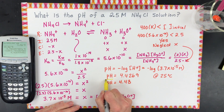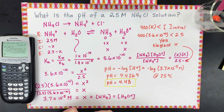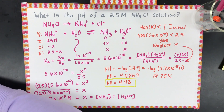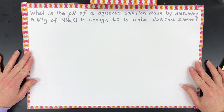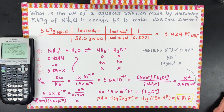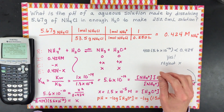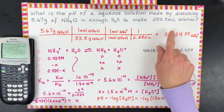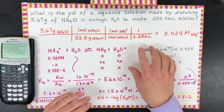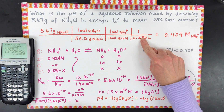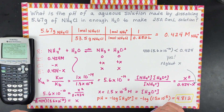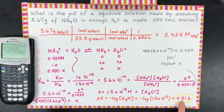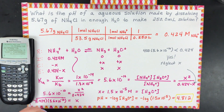I have another problem for you to do — it's a little harder because it involves calculating molarity first, then calculating pH. Pause the video, write it down, and try it. The answer involved converting a given mass and volume to molarity, accounting for the dissociation mole ratio, and then using the same process as before with a different initial molarity. The final pH was a little higher, probably because the concentration was lower.